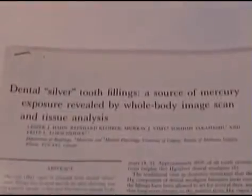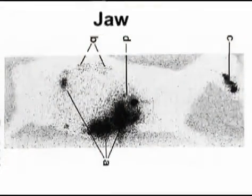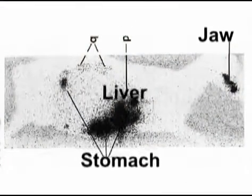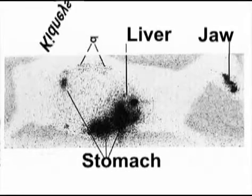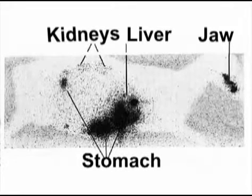Mercury accumulated in the jaw, stomach, liver, and kidney of the sheep in just 30 days. Substantial quantities of mercury spread from the fillings to every organ in that sheep's body.